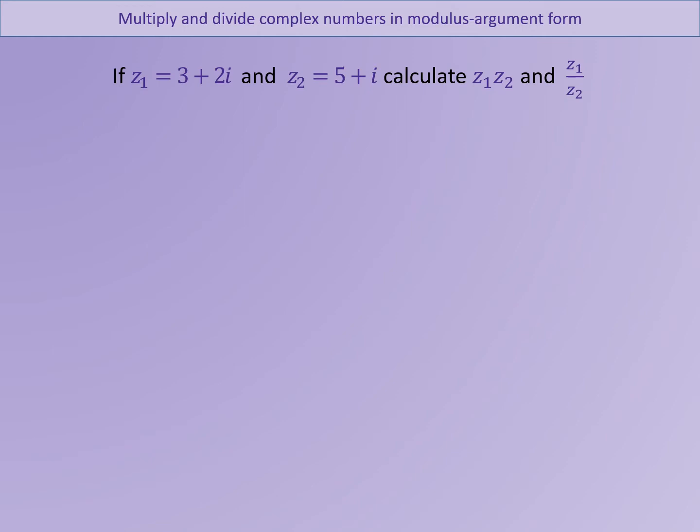So we've got that Z1 is 3 plus 2i and Z2 is 5 plus i. From that, the product Z1·Z2 is 13 plus 13i, and the quotient Z1 over Z2 is 17 over 26 plus 7 over 26i. So we've now got four complex numbers: Z1, Z2, the product Z1·Z2, and the quotient Z1 over Z2.